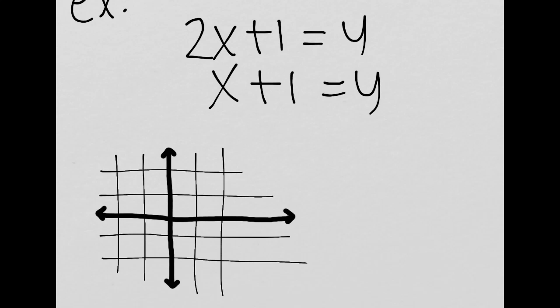I know the y intercepts are both 1. So I have 2x plus 1, so 2x would look like this.